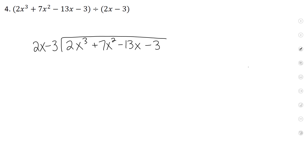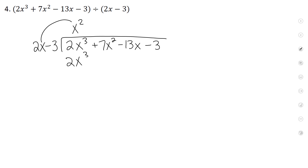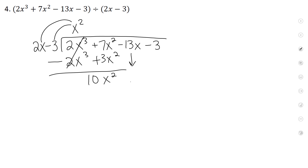2x times what will give you 2x cubed? x squared — there's one x here and I need two more to make it 3. So it should be x squared. Now we multiply: 2x times x squared is 2x cubed. Negative 3 times x squared is negative 3x squared. Now go and change the signs. 2 minus 2 is 0. 7 plus 3 is 10. Bring the variables along with it. Bring down the next item.